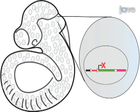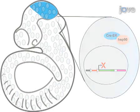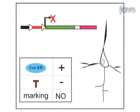is spatially restricted to gene X's expression domain, shown in blue, and Cre-ER protein is sequestered in the cytoplasm by Hsp90. In the absence of tamoxifen, the reporter will be off.